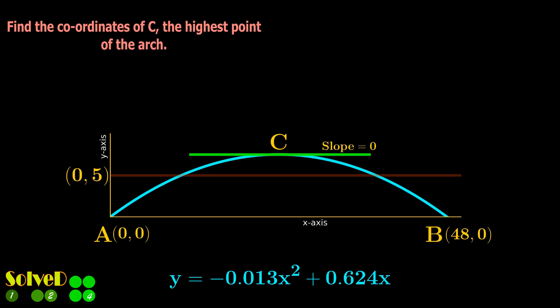Since the slope of the tangent at point C is zero, therefore set the derivative of the function equal to zero and find the corresponding x-coordinate. Then using this x-value into the given equation, find the y-coordinate.